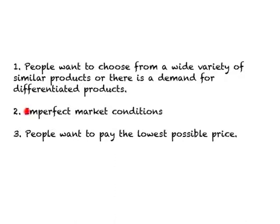Second, in developed countries we have imperfect market conditions — very different from the perfect competition assumed under HOS, which we will examine in the next slide. Third, people want to pay the lowest possible price: they demand more when price is lower and less when price is higher. These are the key characteristics of developed countries.